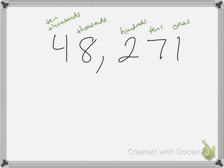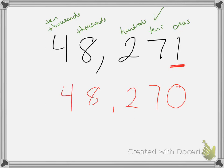Now I want to round this number to the nearest ten. I'm going to put a check above the number I want to round to. When we round a number to the tens place, we look at the digit to the right of it to see if it's five or more. The digit to the right is one, which is not five or more. So we write a zero in its place and keep all of the other digits the same. The one becomes zero and everything else stays the same, so this would be 48,270.